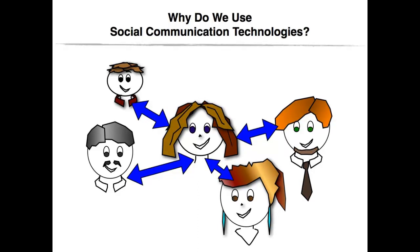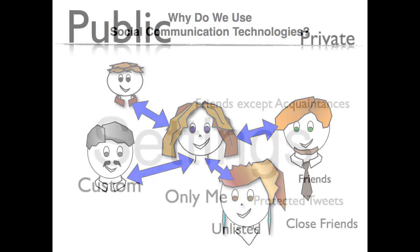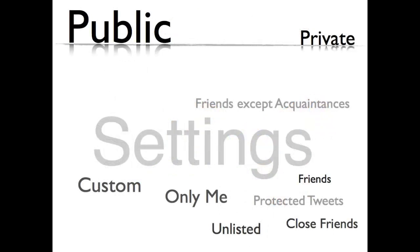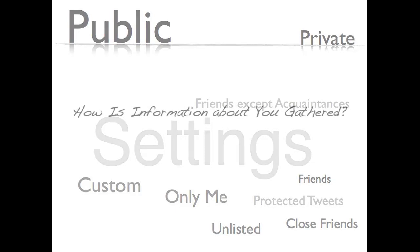Whether these sites are personal network platforms such as Facebook, or microblogging platforms such as Twitter, or location platforms such as Foursquare, or content sharing platforms such as YouTube, or even shared interest platforms such as LinkedIn, most of them publish and share your information publicly unless you are aware of their default settings and modify them before posting anything online.